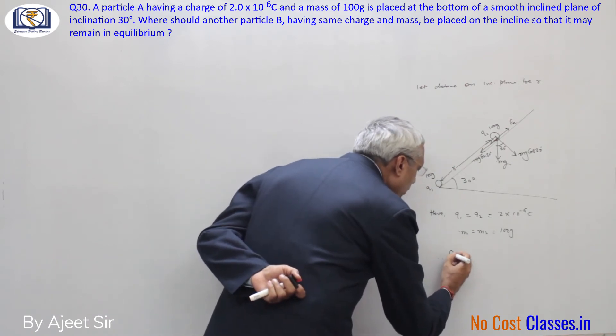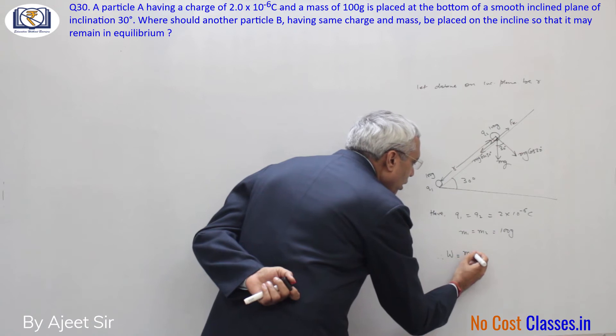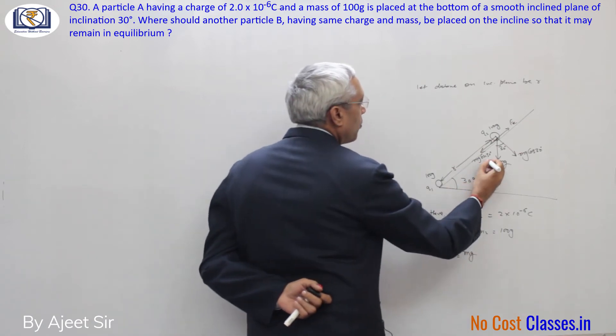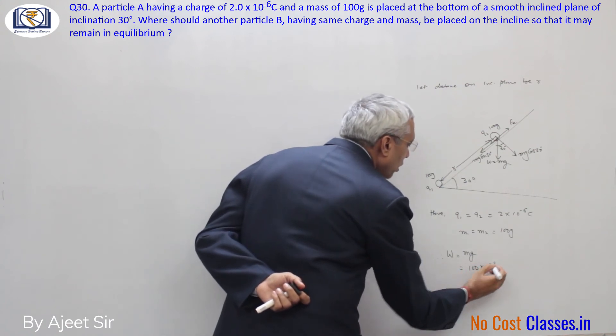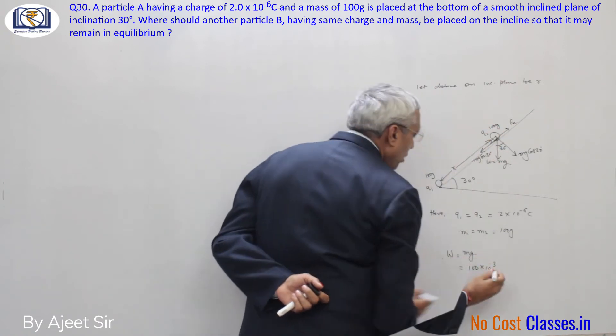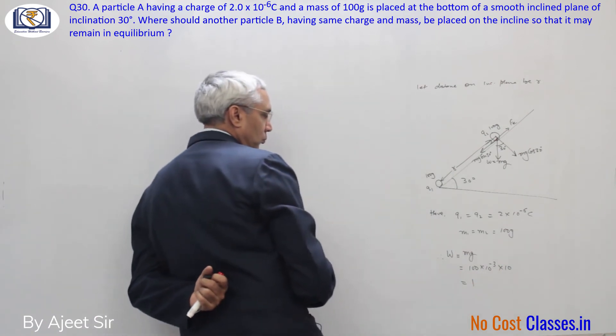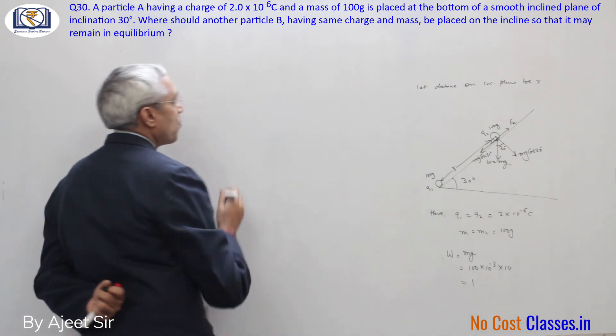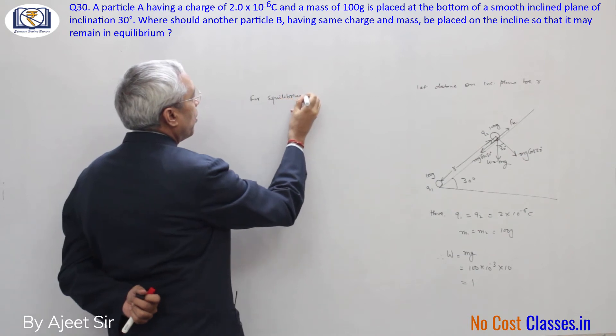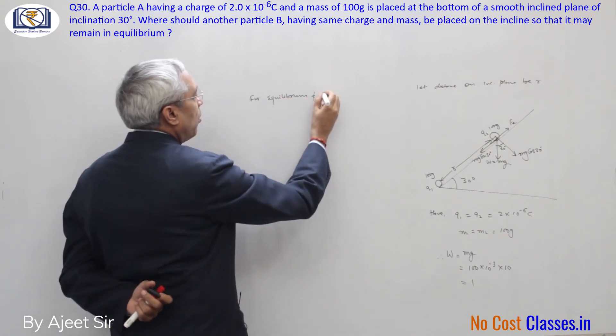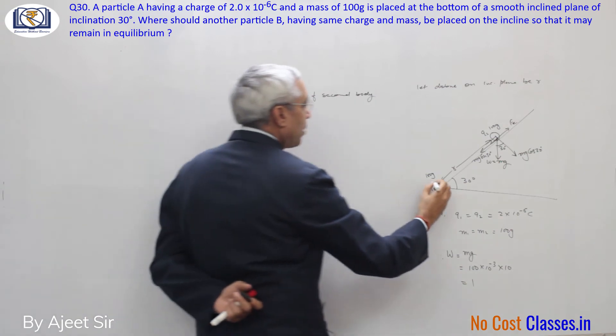So what will be the value of force here? First, let's calculate the weight. Weight will be mg. W equals mg, that is equal to 100 into 10 to power minus 3. Mass will be 100 grams. Taking g as 10, this will be 1. Now for equilibrium of the second body.